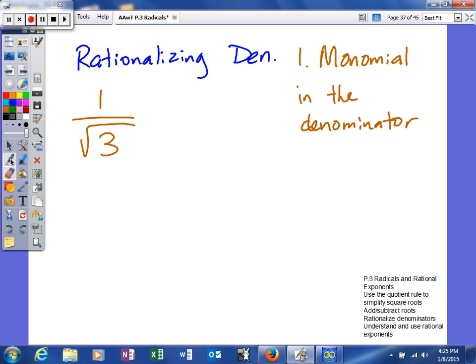What we're talking about next in section P3 is how to rationalize the denominator. Now there are two different things that we're going to look at. We're going to look at if your denominator is a monomial, which means one term, or if the denominator is a binomial. So we'll look at both cases, but first of all we'll look at this one.